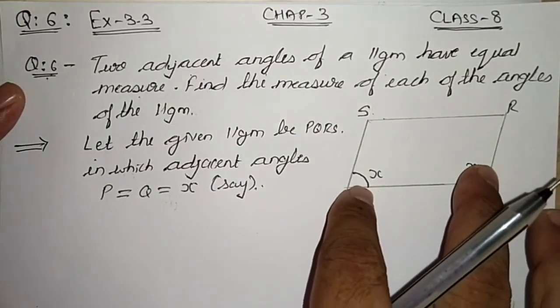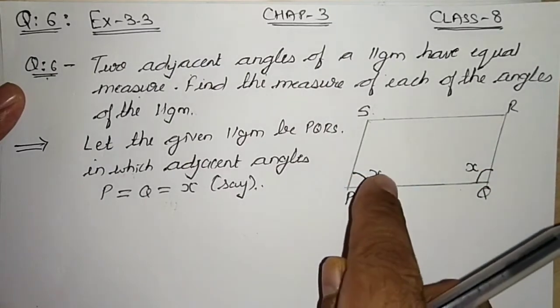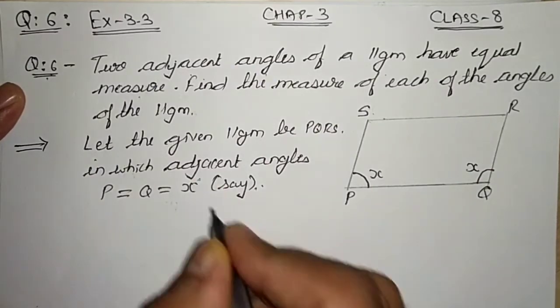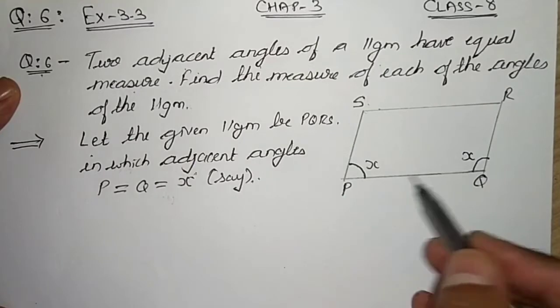So I have supposed that let angles P and Q, the adjacent angles P and Q, be of equal measure, and that measure is of x degrees. Let the given parallelogram be PQRS in which adjacent angles P equals Q equals x.